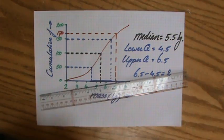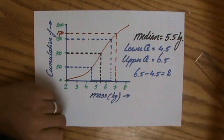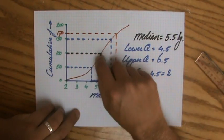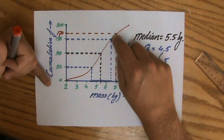But now be careful. This is cumulative frequency. So 170 bricks weigh 7 kilos and less.